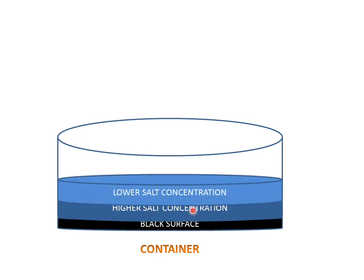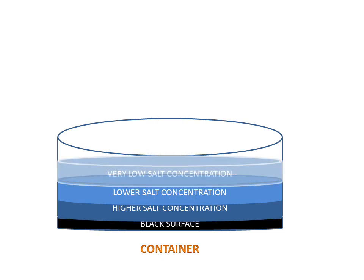The upper layer has lower salt concentration, and the very upper layer has very low salt concentration. This is a solar pond with a black surface and salt concentration varying across water layers.